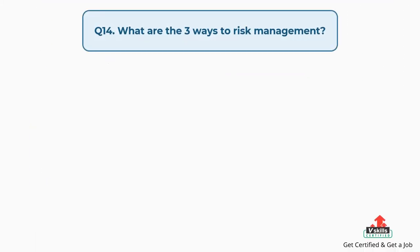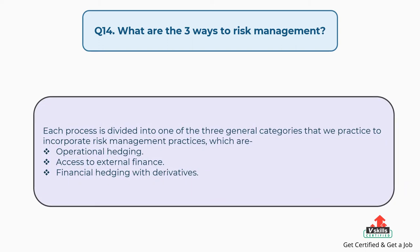Question number fourteen: what are the three ways to risk management? Each process is divided into one of three general categories used to incorporate risk management practices, which are: operational hedging, access to external finance, and financial hedging with derivatives.